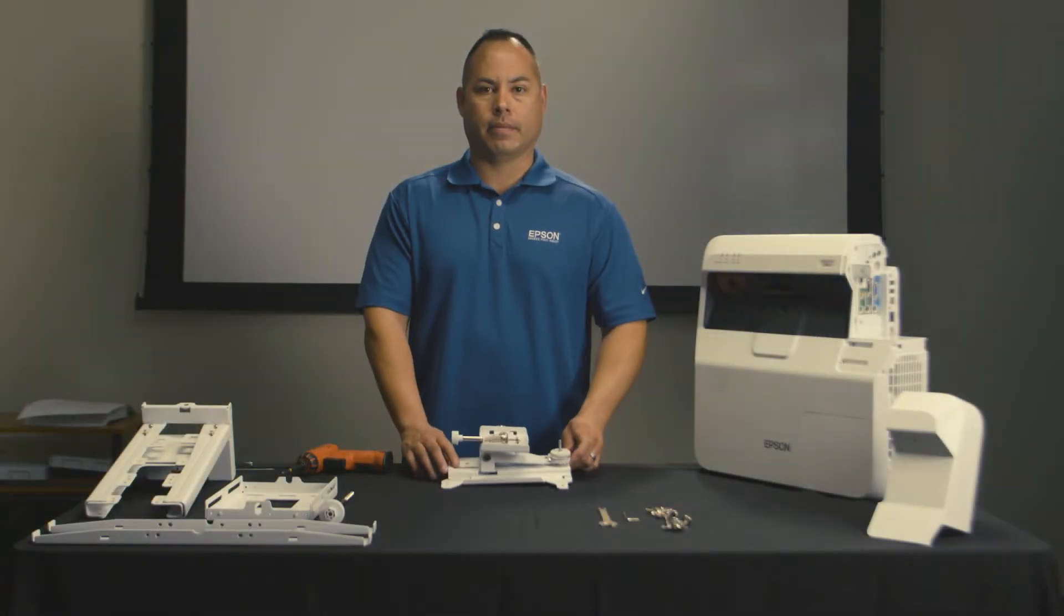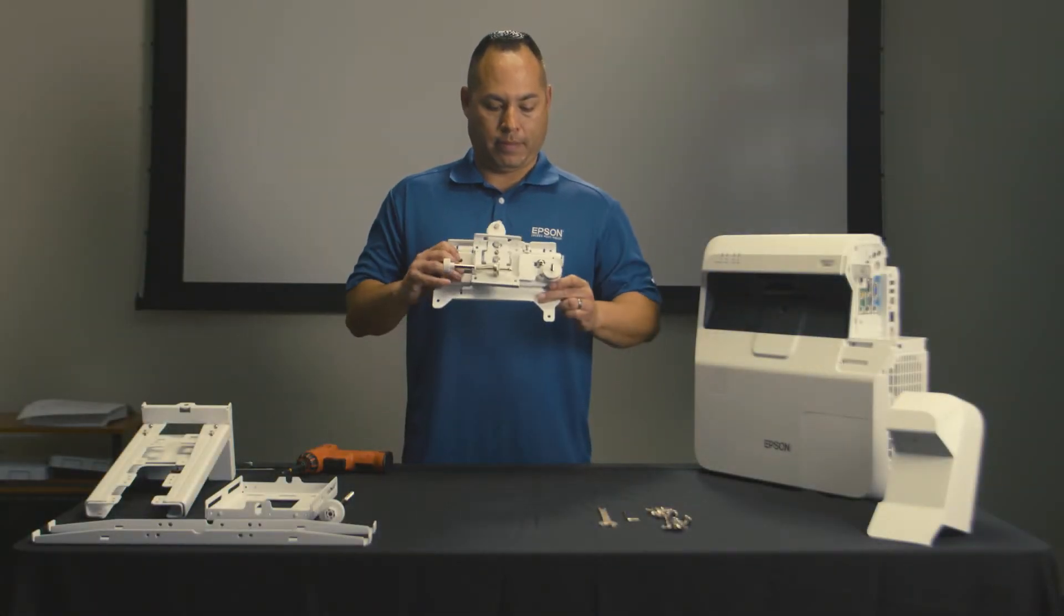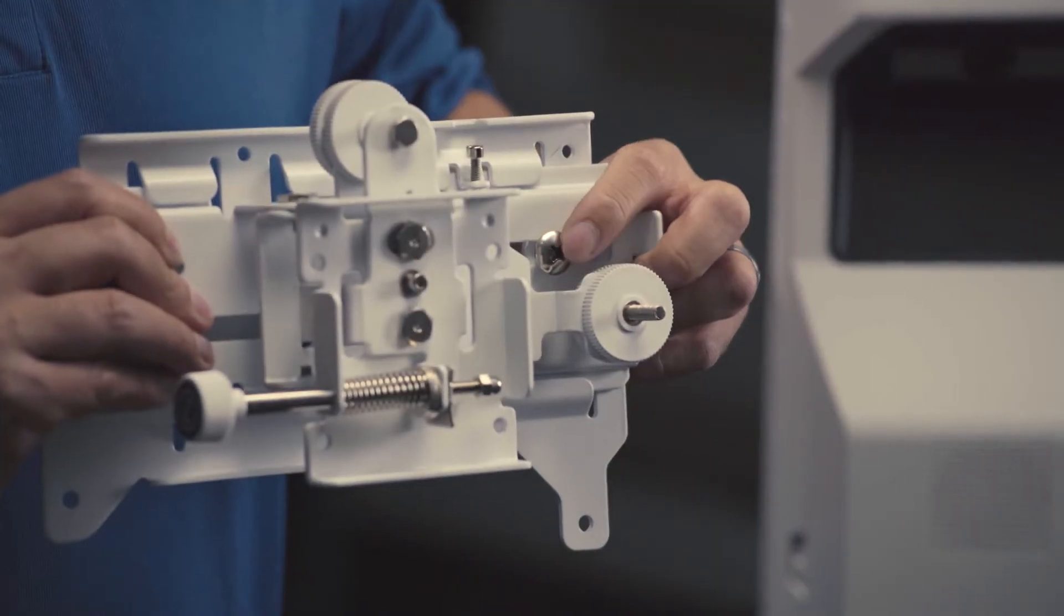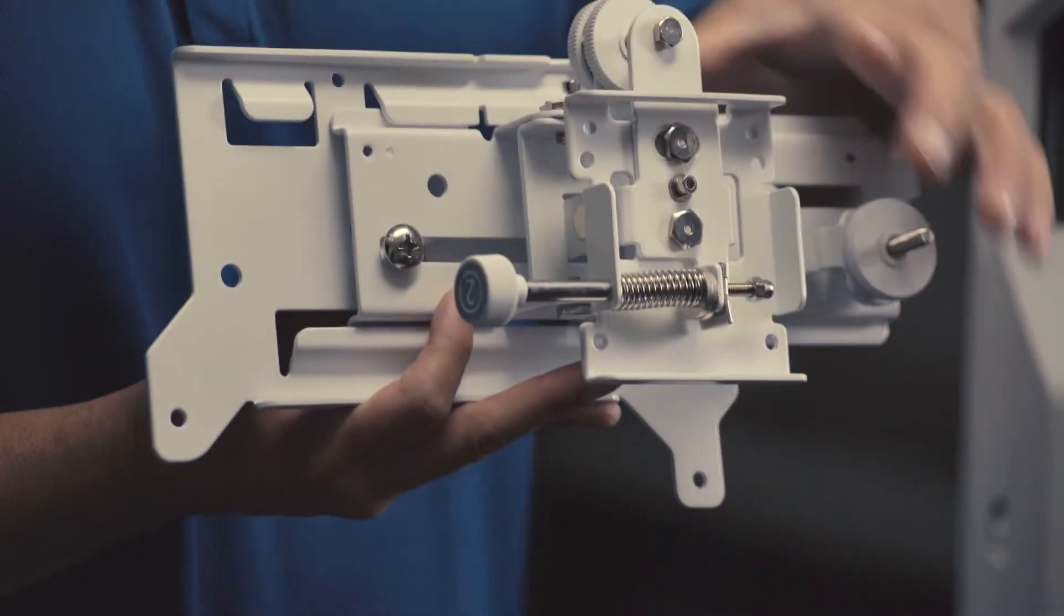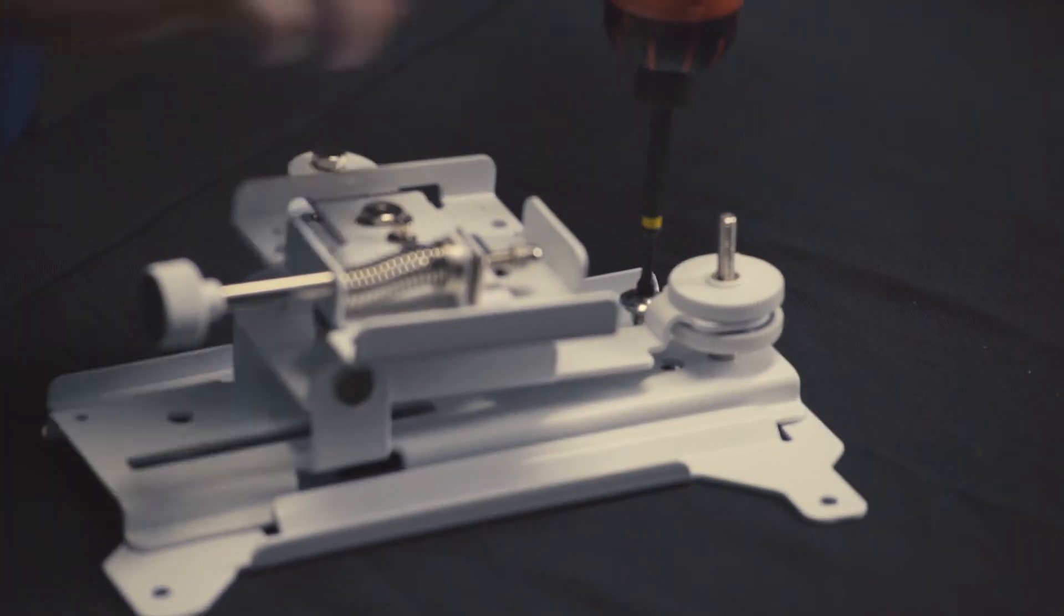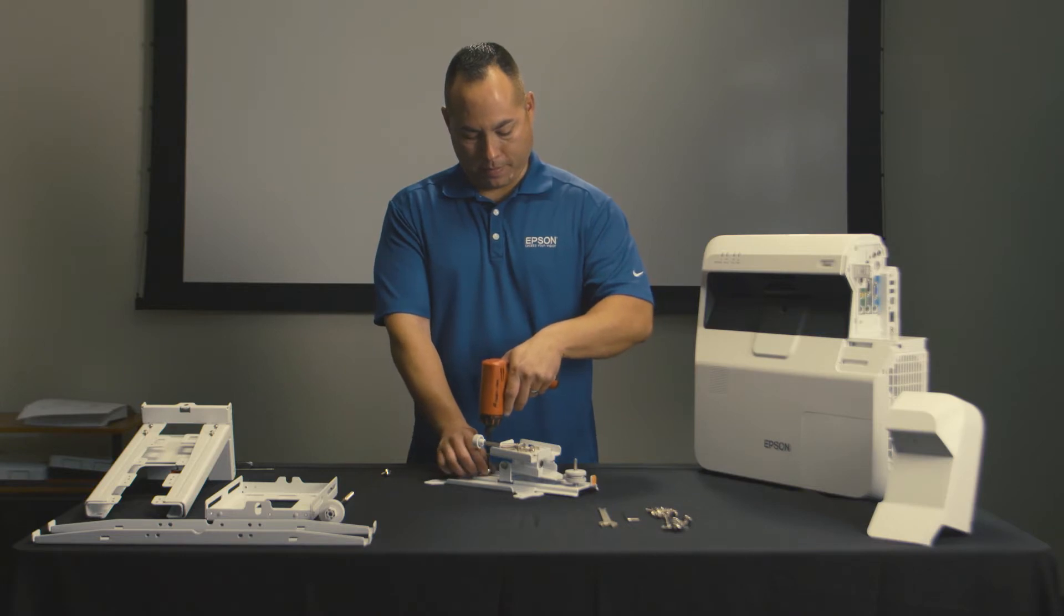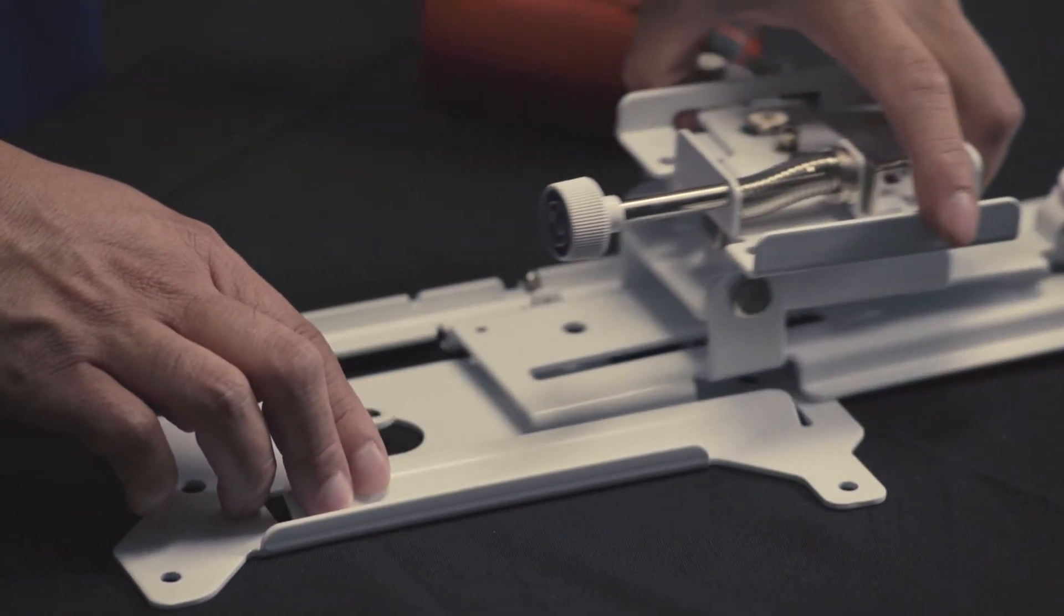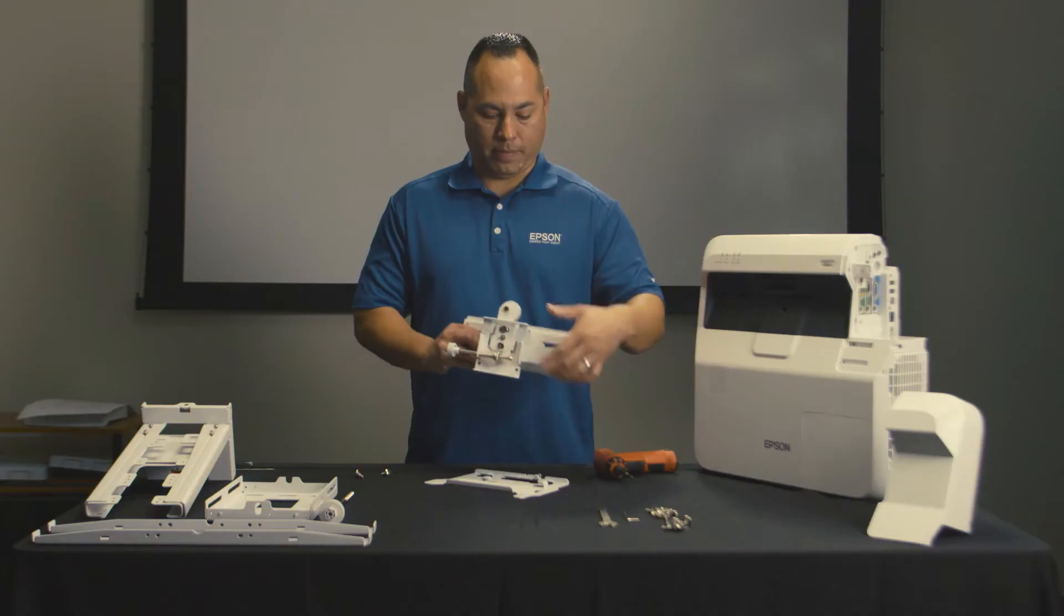Let's begin by attaching the projector plate to the projector. First we need to separate the mounting plate from the three-point adjustment axis. We do so by loosening the side set screw and then removing the two large screws from the three-point axis. The plate will then slide off.